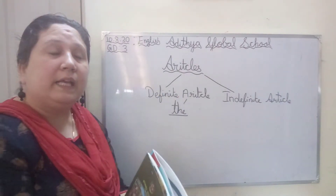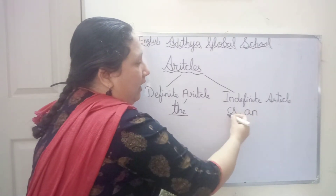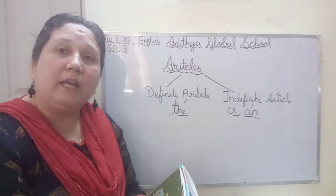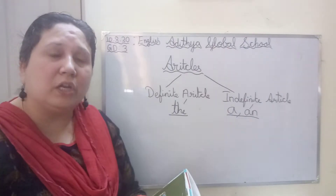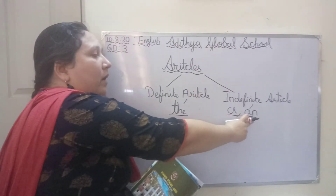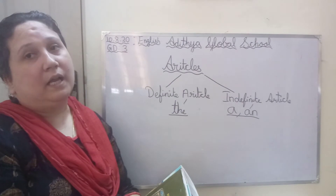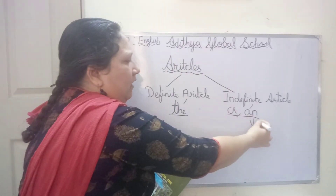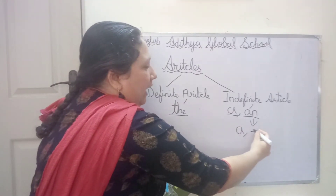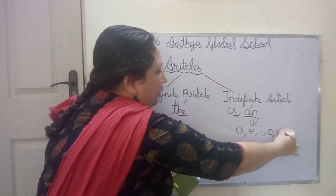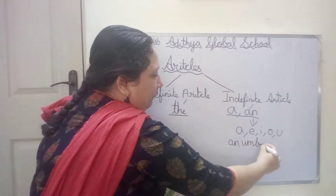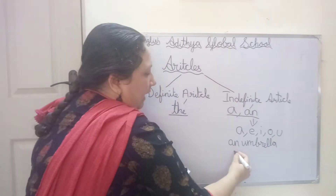Indefinite article is A and AN. We use A or AN. This is our indefinite article. I am saying RAM is eating an orange — I am not talking about any specific orange, just an orange. We use A or AN for indefinite article. Now, A and AN: when a word starts with a vowel — A, E, I, O, U — we use AN. Like an umbrella, an egg.